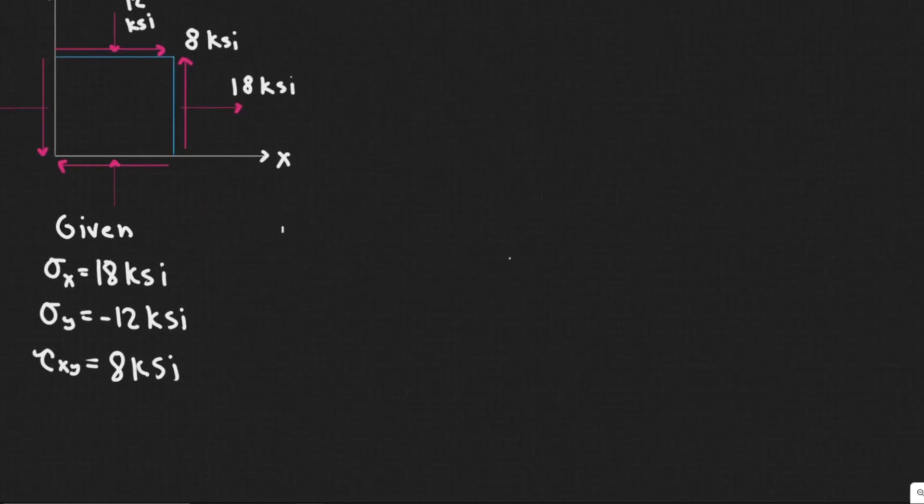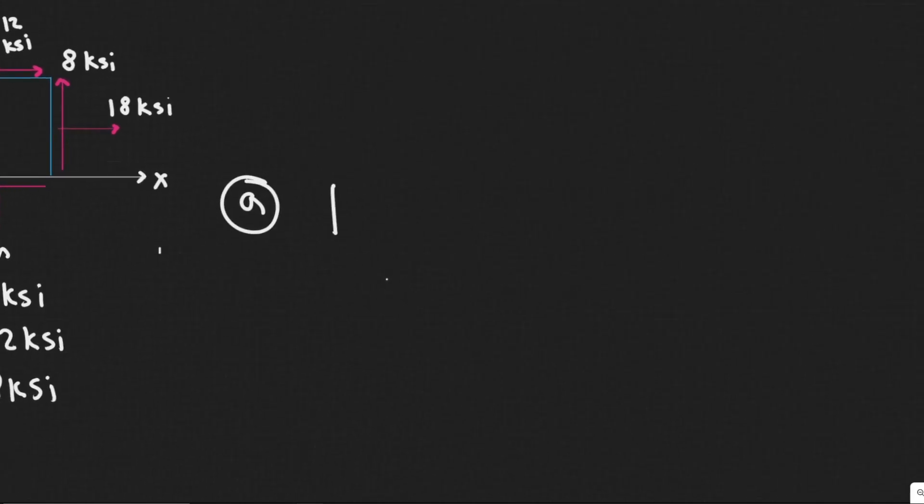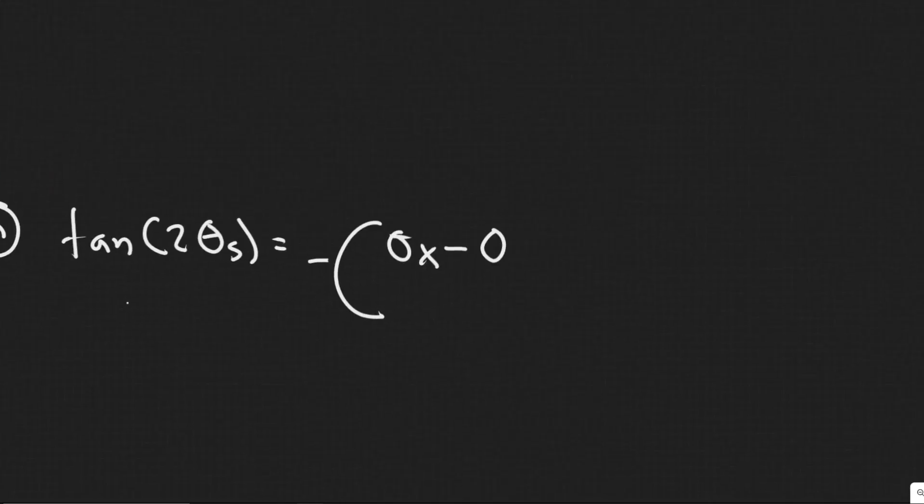So really for this problem, it's just a matter of plugging things into formulas. The first part is the orientation of the planes of maximum in-plane shearing stress. Basically, they just want the angle, so the way we solve this is by doing this formula. The tangent of 2 theta s is equal to minus sigma x minus sigma y over 2 tau xy.